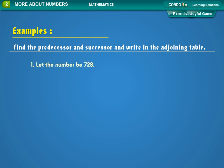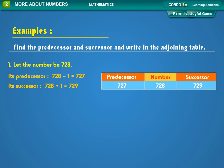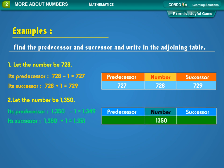Let the number be 728. Its predecessor: 728 minus 1 equals 727. Its successor: 728 plus 1 equals 729. Predecessor: 727, Number: 728, Successor: 729.